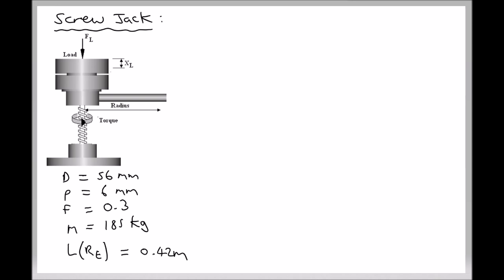We're also going to look at how we would calculate the force that needs to be applied to the end of the handle in order to lift the load. We're going to go through a sequence of calculations. The first thing we're going to calculate is the velocity ratio for the screw jack, which is determined by the distance travelled by the effort divided by the distance travelled by the load.